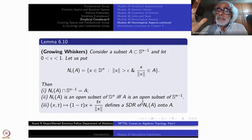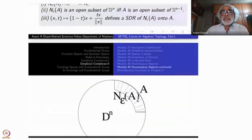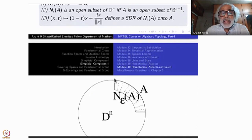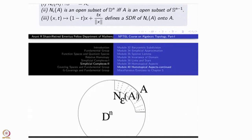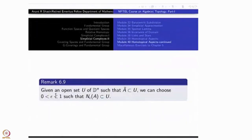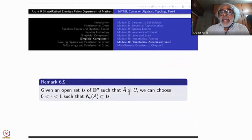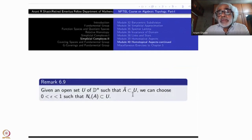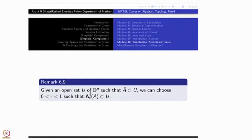This is the germ of the idea in Euclidean space from which we want to extend to simplicial complexes. An important remark: starting with an open subset u of Dn such that Ā ⊆ u, since Ā is compact we can choose 0 < ε < 1 such that Nε(A) is contained inside u. From this growing whiskers construction we now proceed to the big theorem.